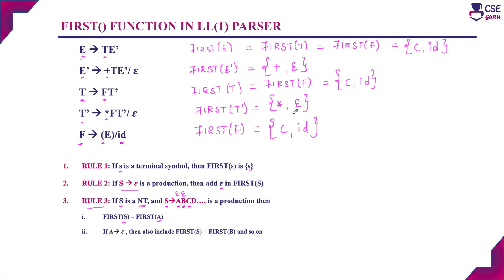Now we have found the FIRST function for all non-terminals. To summarize: FIRST(E) = { (, id }, FIRST(E') = { +, ε }, FIRST(T) = { (, id }, FIRST(T') = { *, ε }, and FIRST(F) = { (, id }.